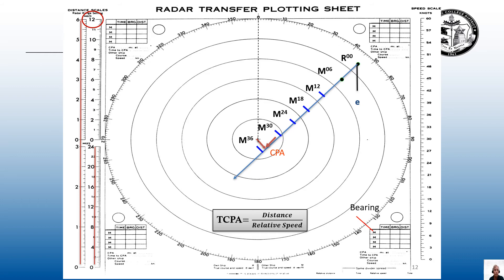So from that relative motion line, you can find direction of relative motion, speed of relative motion, closest point of approach and bearing of CPA, and time to closest point of approach, or TCPA. So you can't tell me relative motion is not important to us.